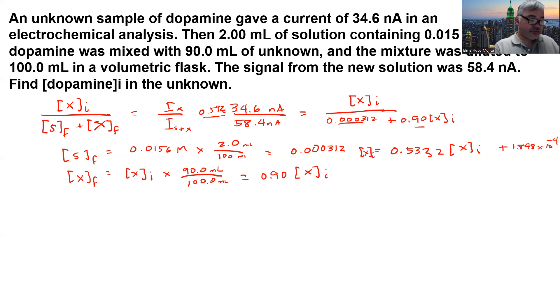So putting everything together, we have Xi minus 0.5332 Xi equals 1.848 times 10 to the negative 4.